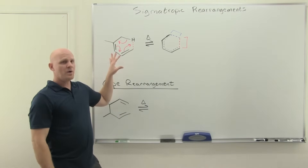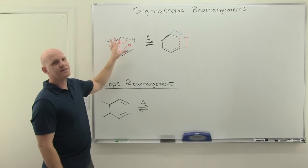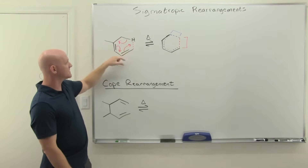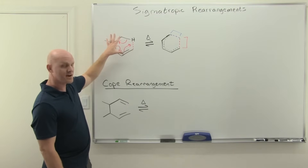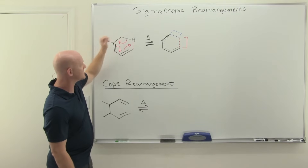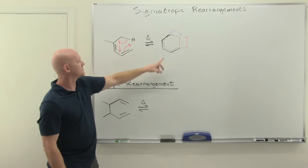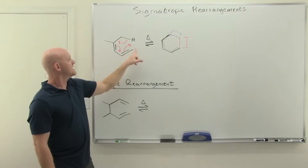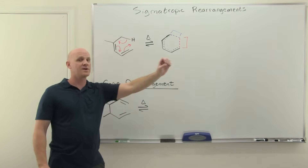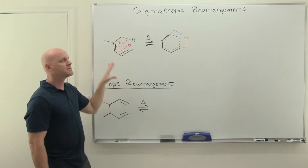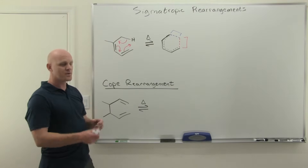When you're trying to predict the product in a sigma-tropic rearrangement, if your reactant is not drawn in such a way that you can see the five-sixths of a six-membered ring, you'll want to redraw it. The way I've drawn it here, it looks almost like a six-membered ring — like a cyclohexane — just with that bond missing. If you're trying to predict the product, redraw your reactant so that you've got five-sixths of a six-membered ring.